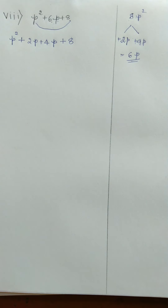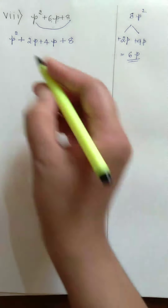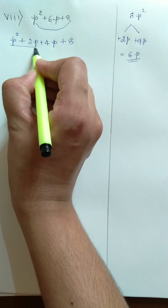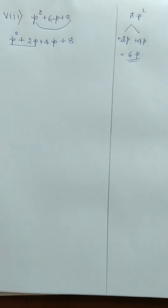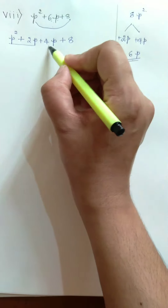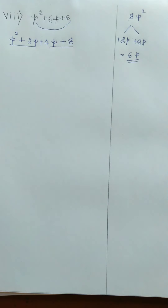There are 4 terms present. We have to group these 4 terms into 2 groups such that each group contains 2 terms. We group P squared plus 2P as one group and 4P plus 8 as another group.